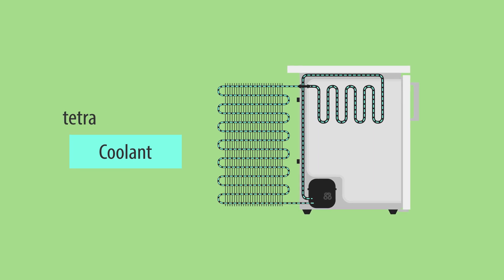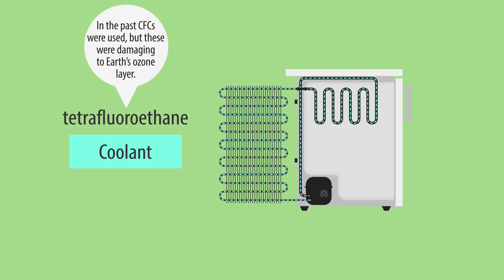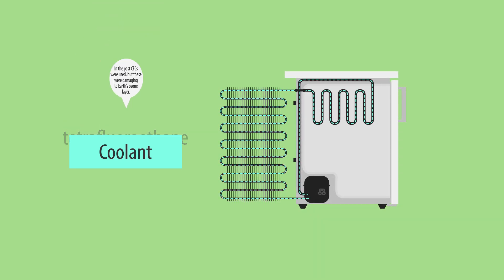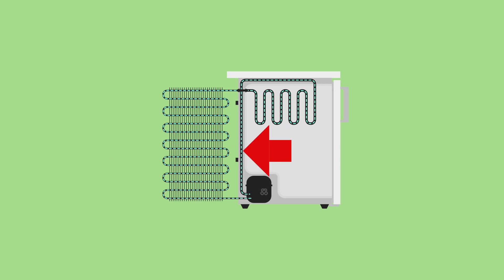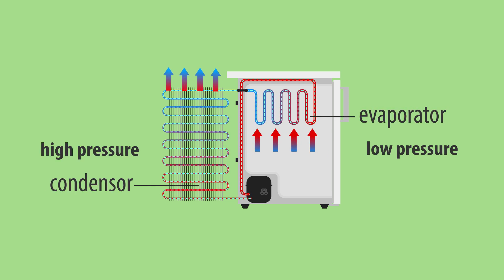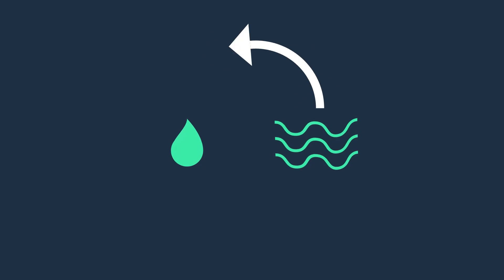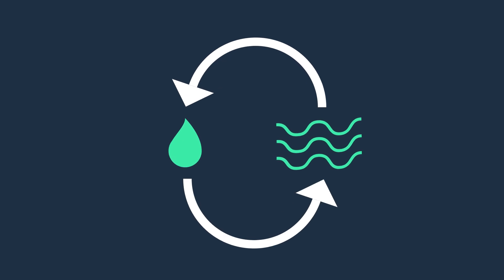A modern fridge uses tetrafluoroethane as coolant. The coolant moves heat from the inside of the insulated cabinet to the outside. Because of a difference in temperature and pressures, the coolant keeps transitioning between a liquid and gas and back again.